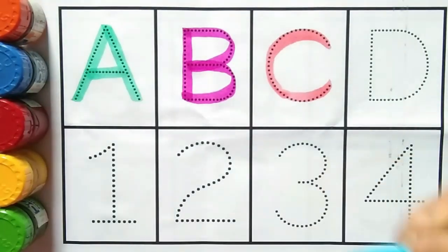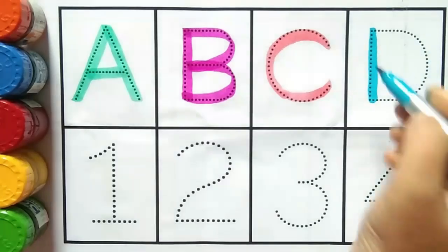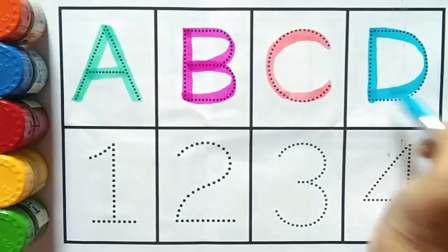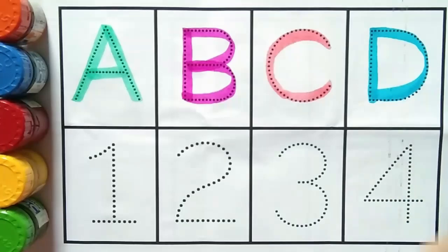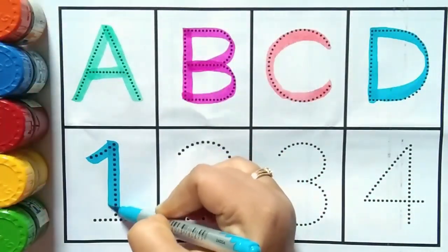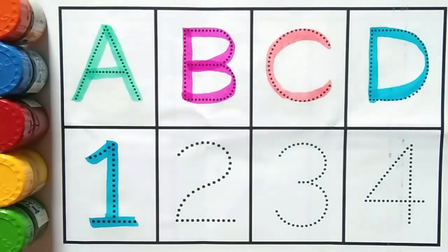After C comes D. D for doll. D for what kids? D for doll. One, this is number one. What is this kids? This is number one.